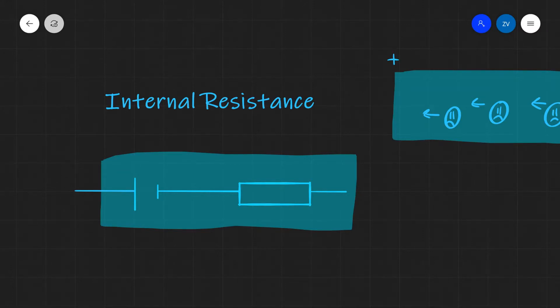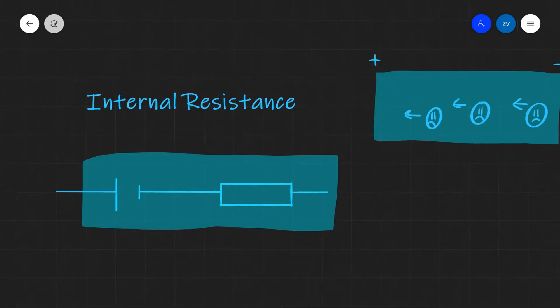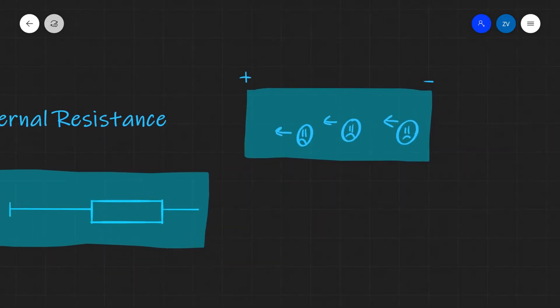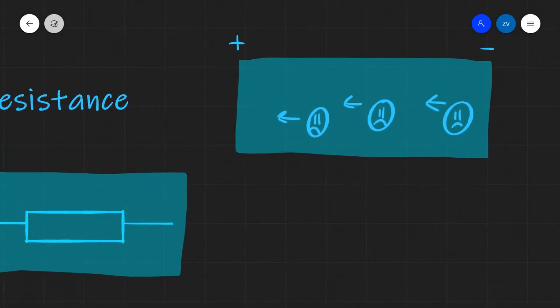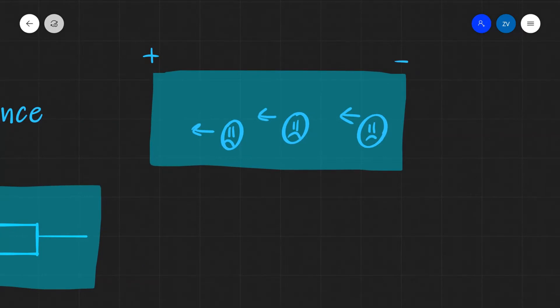Today we're going to be discussing internal resistance. What is internal resistance? Let's imagine any source of EMF, for instance, this could be a cell or a car battery.